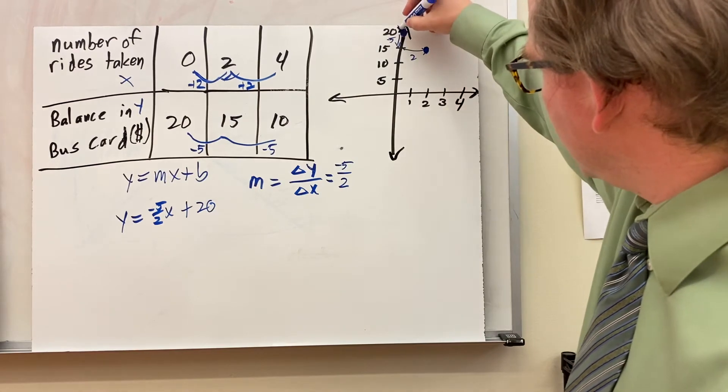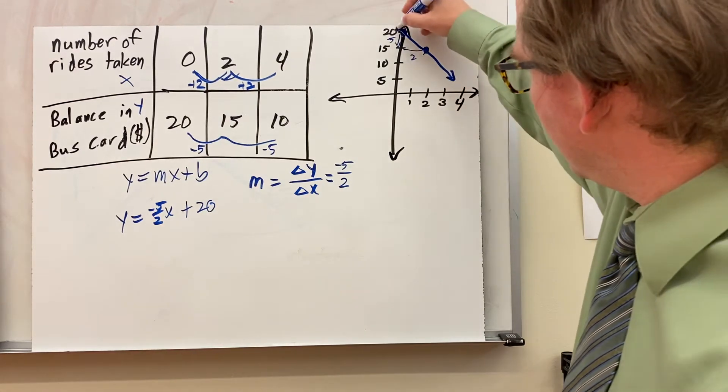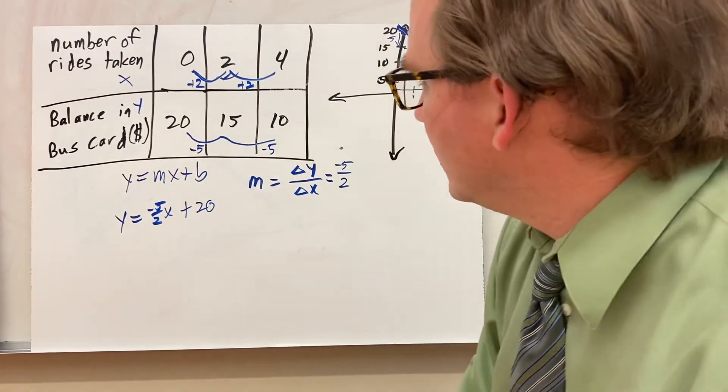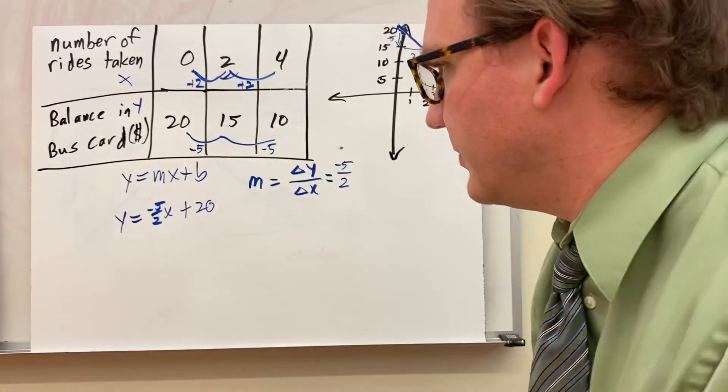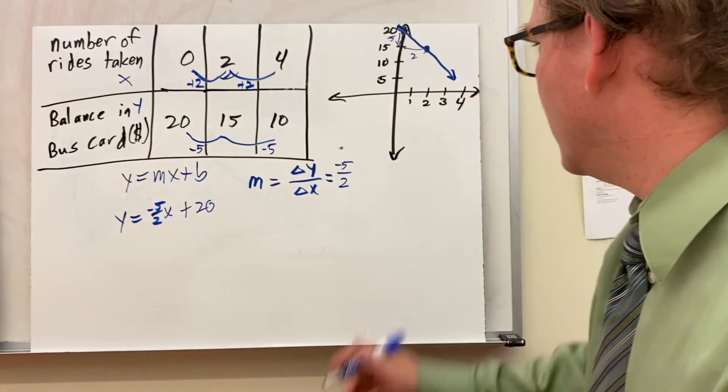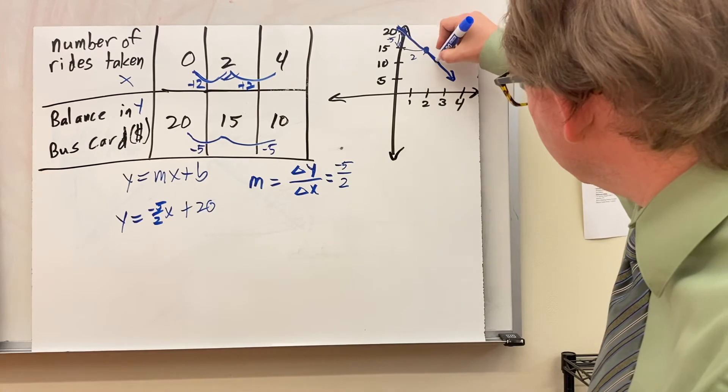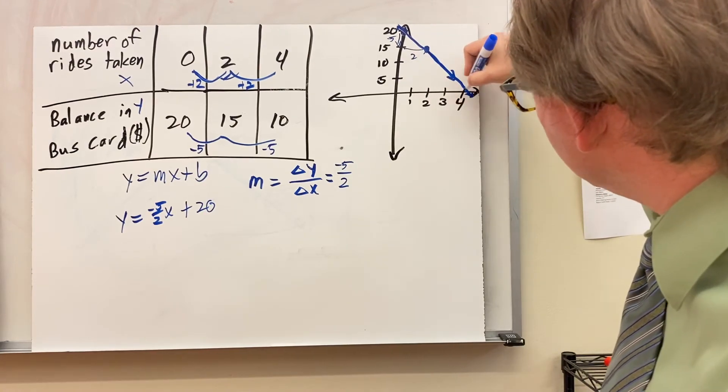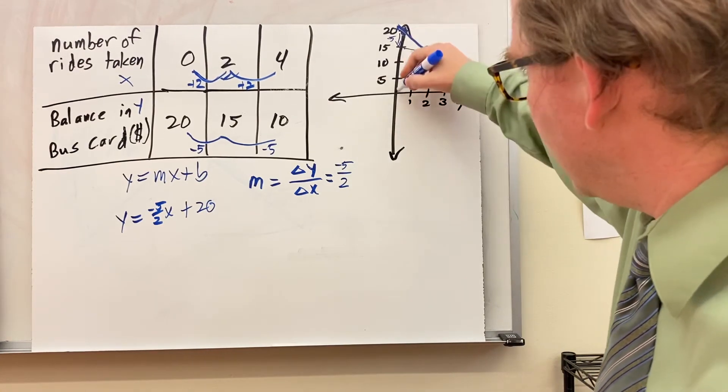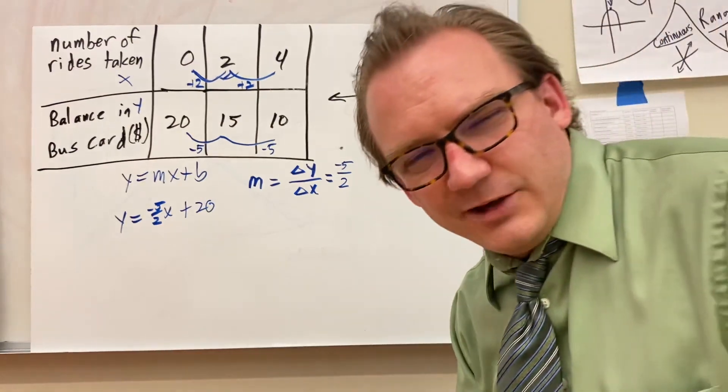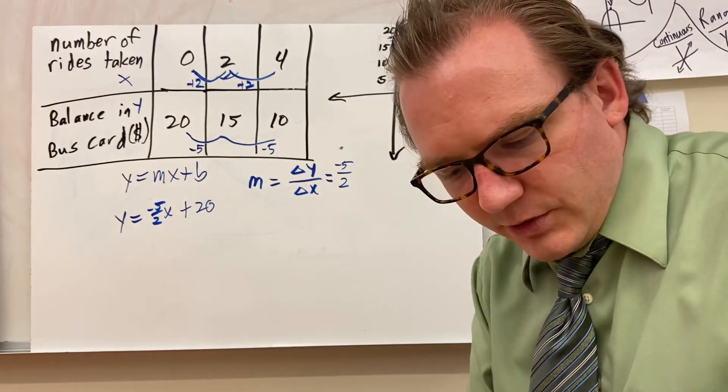And then I can just connect the dots here, draw my arrows, and I've graphed this line, which would show the number of rides taken, the balance on the bus card. You could also even extend this line down and try and figure out, okay, where does this now cross? When does my balance equal 0? Things like that you might want to figure out, think about when you're solving these problems.